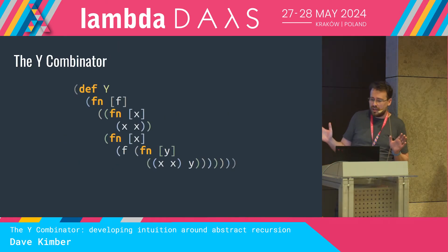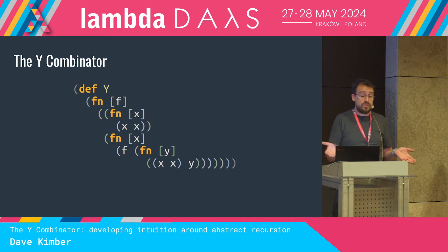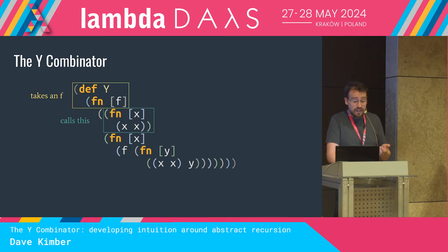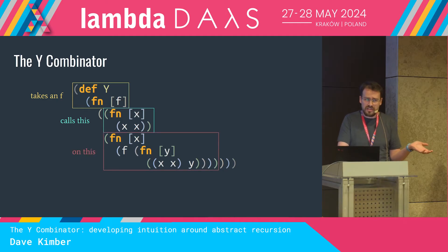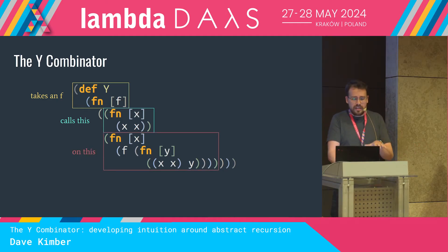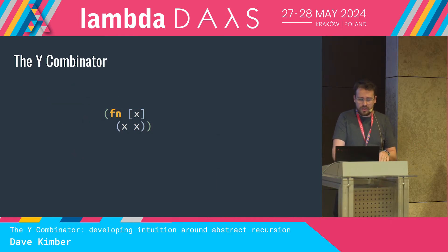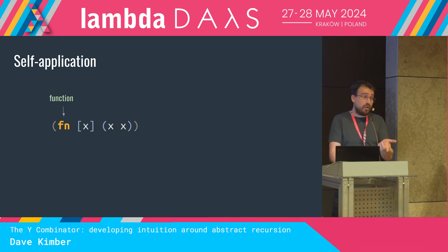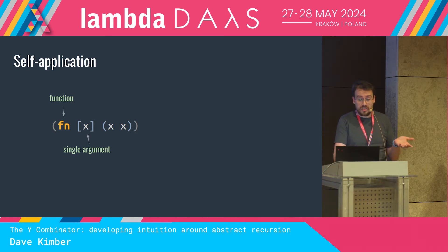Here we are back at the Y Combinator — let's look at its structure. We're defining Y to be a function which takes F, another function, as its argument. Then it calls this lambda expression on this one. Let's look at that first lambda, which we're going to call the self-application function. It's an anonymous function with a single parameter X. Its body calls X, passing X in as an argument.